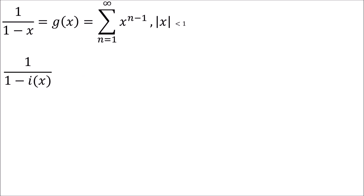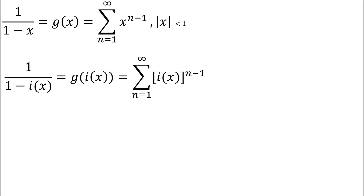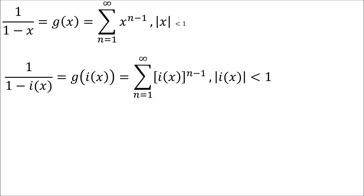Now let's look at what happens if we change what's in the denominator. I'm calling i of x my inside function. As i of x — not new, we've seen this — I'm just replacing x with i of x everywhere I see an x. So my power series representation becomes g of i of x, which is the sum from n equals 1 to infinity of i of x to the n minus 1. This means my radius may have changed, so we need to be careful — composing with i of x certainly changes the radius of convergence.